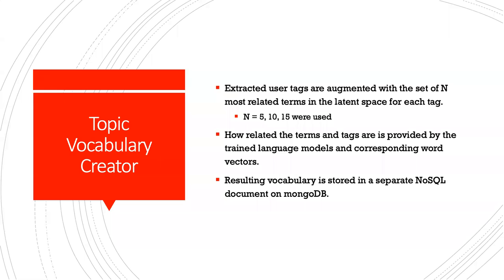Topic vocabulary creator: extracted user tags were augmented with a set of N most related terms in the latent space for each tag, where N equaled 5, 10, or 15. How related the terms and tags were is provided by the trained language models and corresponding word vectors. The resulting vocabulary was then stored in a separate NoSQL document on MongoDB.